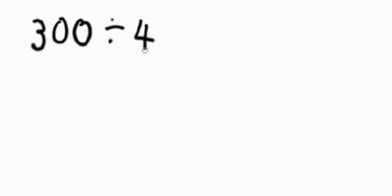So, 300 divided by 4 big squares: four sixes are 24, seven fours are 28, seven with two left over — that gives us 75 beats per minute. That's Method 1.